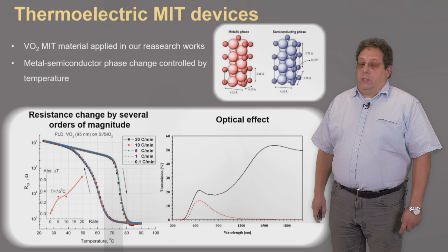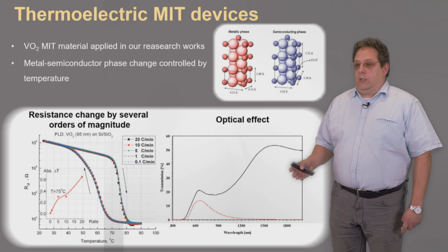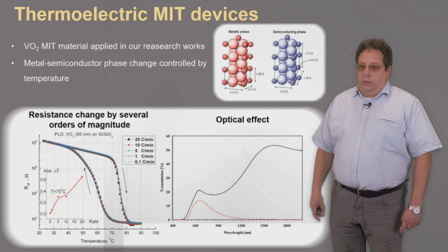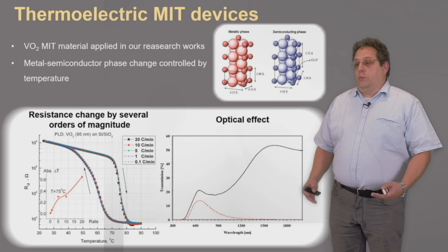The vanadium dioxide metal-insulator transition material is an exciting material which can change its electrical properties from the insulator state to the metallic one by temperature, in nanosecond timescale and in reversible mode. This material allows us to create a new type of device family with a new operation approach.